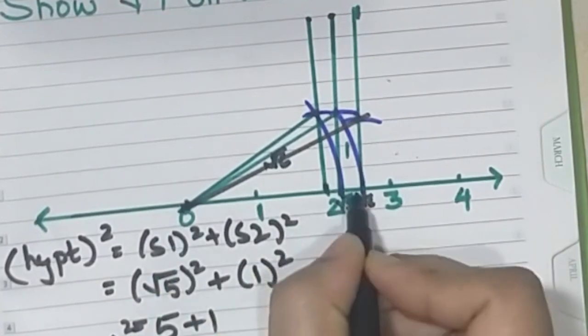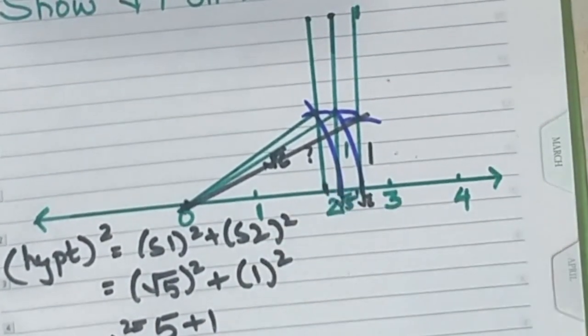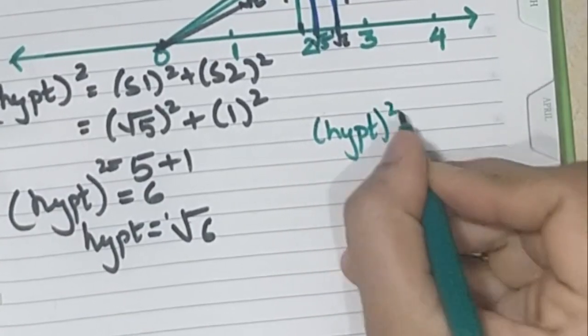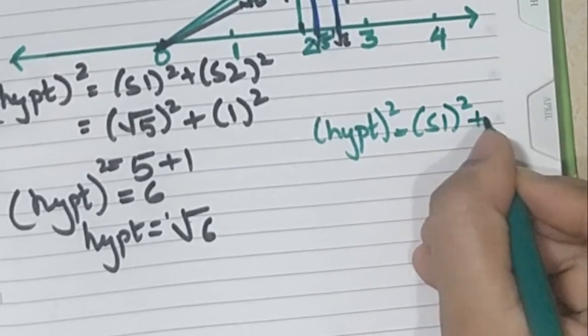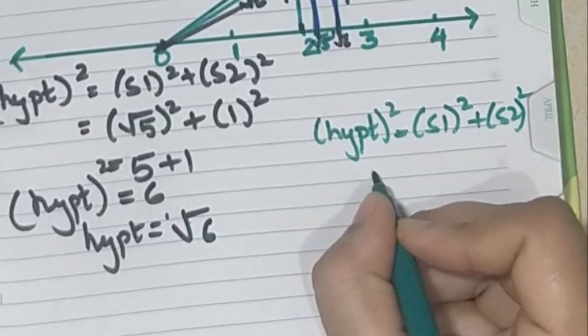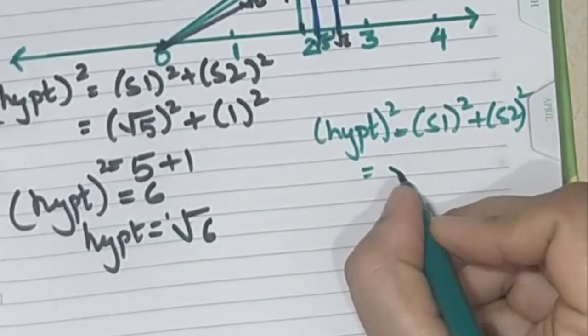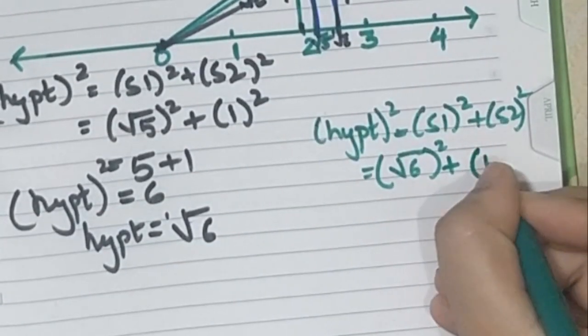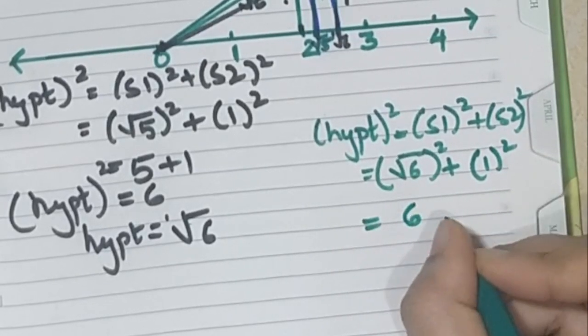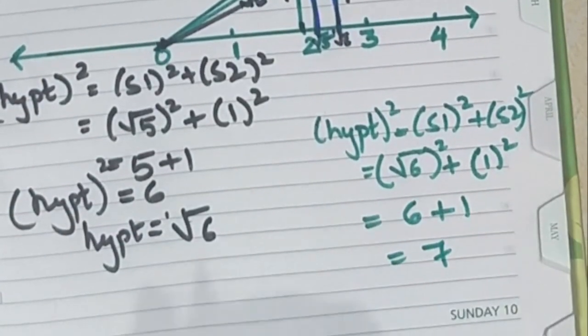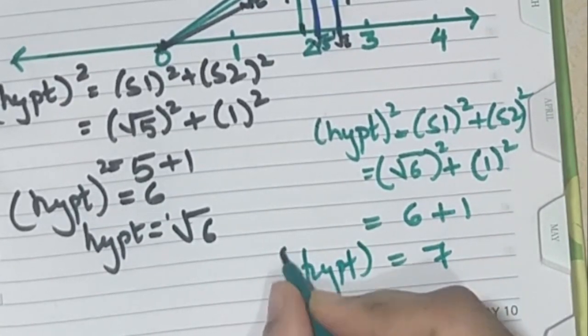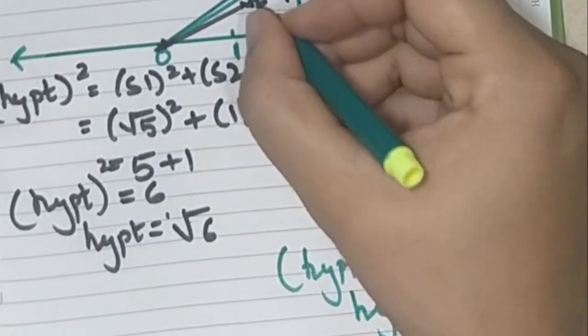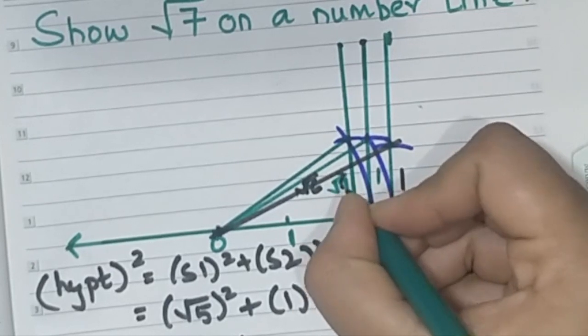Now this is root 6, this is 1. We need to find out how much is this. Again, hypotenuse square formula. Hypotenuse square is equal to side 1 square plus side 2 square. Since we are drawing root 7, side 1 is root 6 and 1 unit as is. So (√6)² + (1)² equals 6 plus 1 equals 7. Therefore, hypotenuse is root 7. That means this black line is root 7.